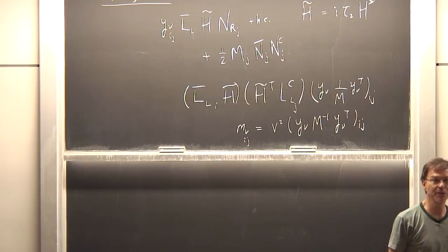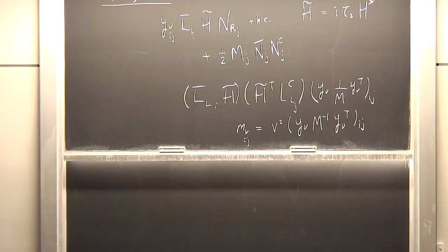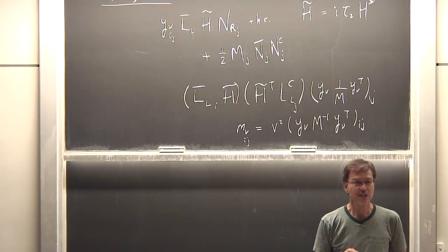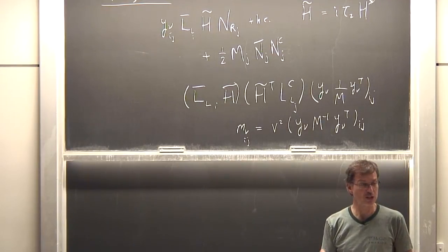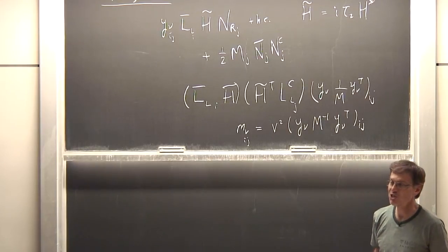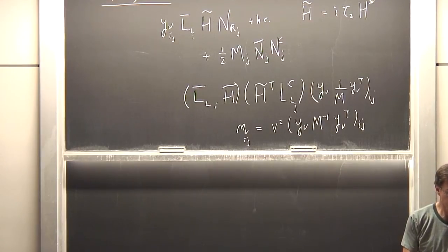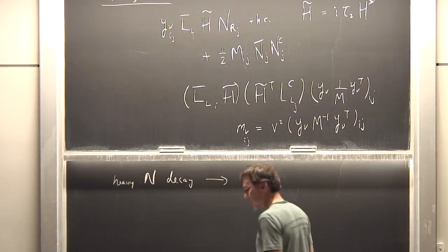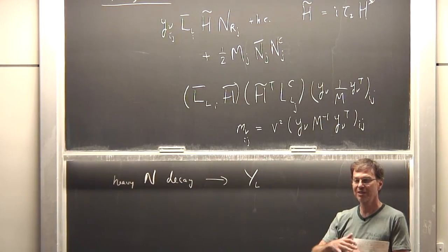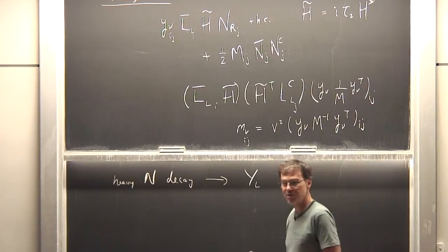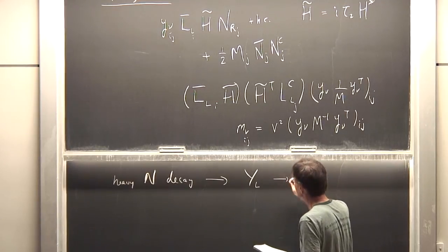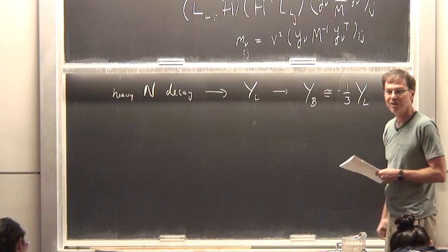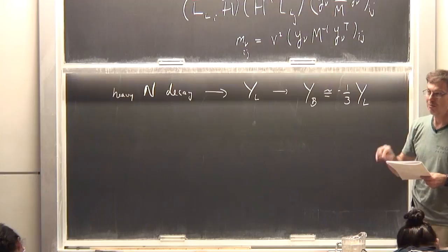This is actually a nice warm-up for leptogenesis. The reason it's called leptogenesis is that we're not trying to initially generate a baryon asymmetry directly. Instead, the heavy neutrinos decay out of equilibrium and generate a lepton asymmetry. The sphalerons then partially convert that to a baryon asymmetry. Roughly speaking, you get a baryon asymmetry which is of order one-third of the lepton asymmetry when you work out all the chemical equilibrium conditions.